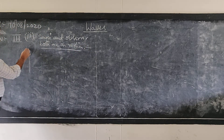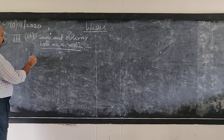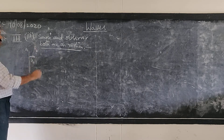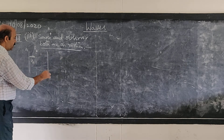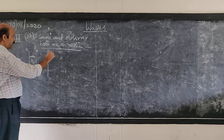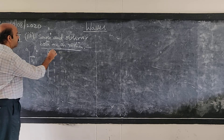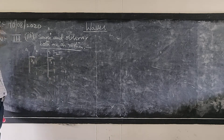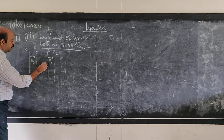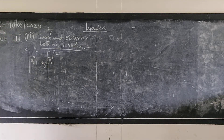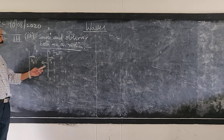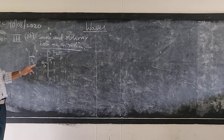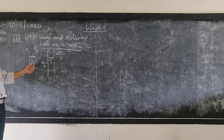Let us suppose here is the observer moving with a speed V0, and here is the position of the source. At the same time, the source would have moved to a new position S2 — let us suppose it is also moving away. The sound waves are to be considered with respect to the observer. With respect to the observer, the relative velocity is V plus V0, since the observer is moving towards the source.